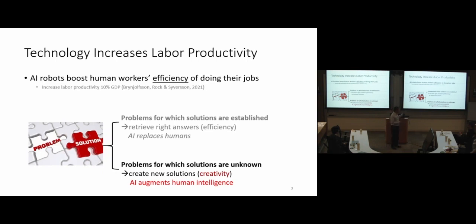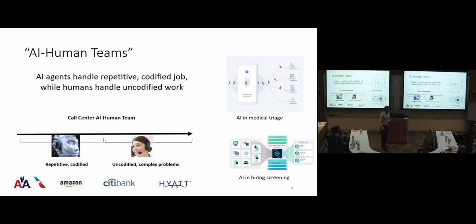So the efficiency is very high for AI. The implication is AI may replace humans in those jobs. By contrast, our paper here focuses on problems where the solutions are unknown. You do not know, so that's where you need creativity. The implication is very important because we need to create new solutions. This creativity is at the core, where the implication is that AI is going to augment human intelligence.